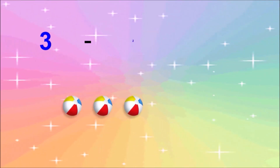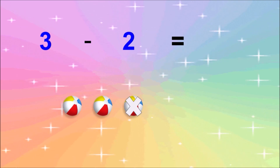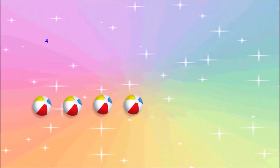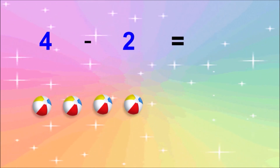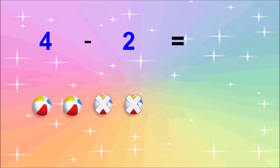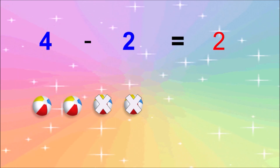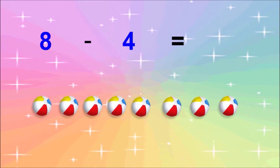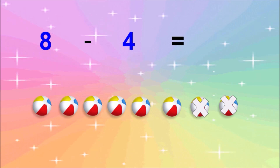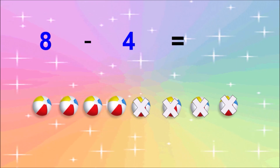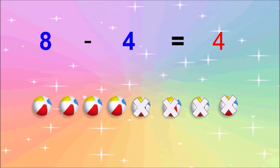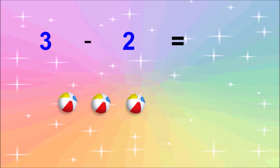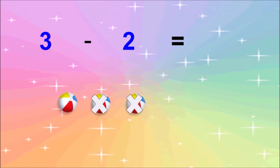3 minus 2 equals 1. 4 minus 2 equals 2. 8 minus 4 equals 4. 3 minus 2 equals 1.